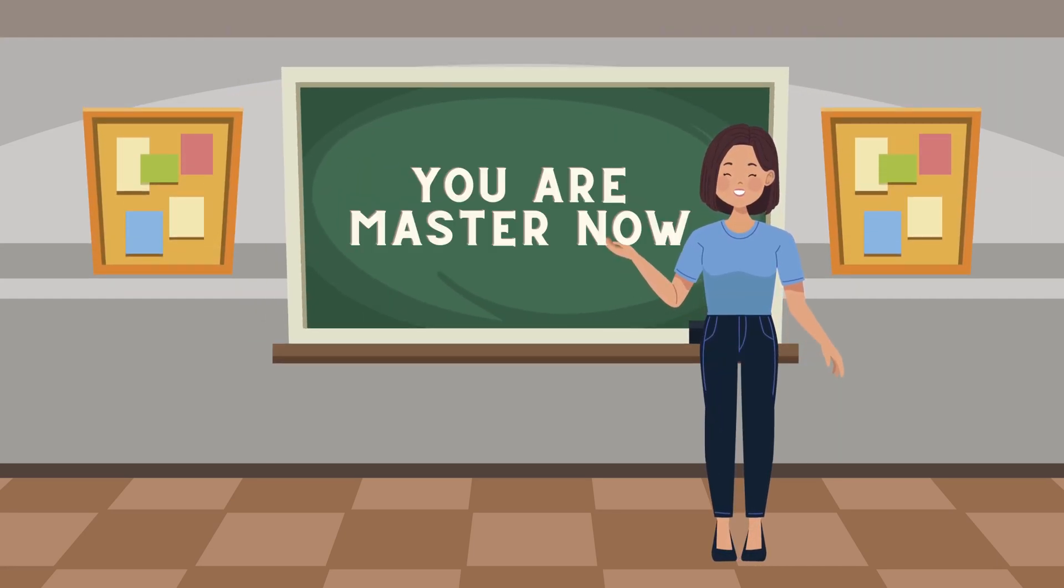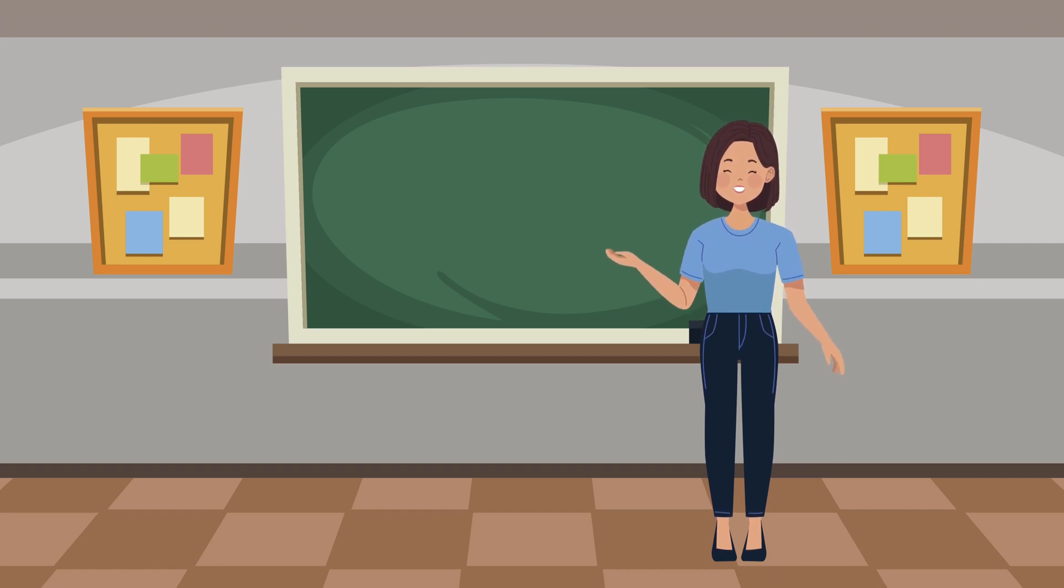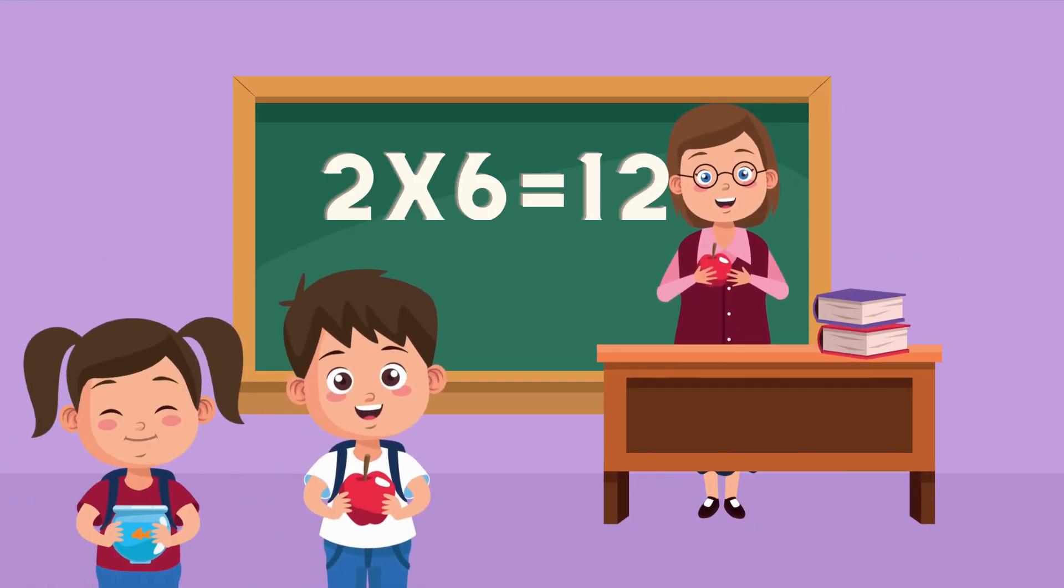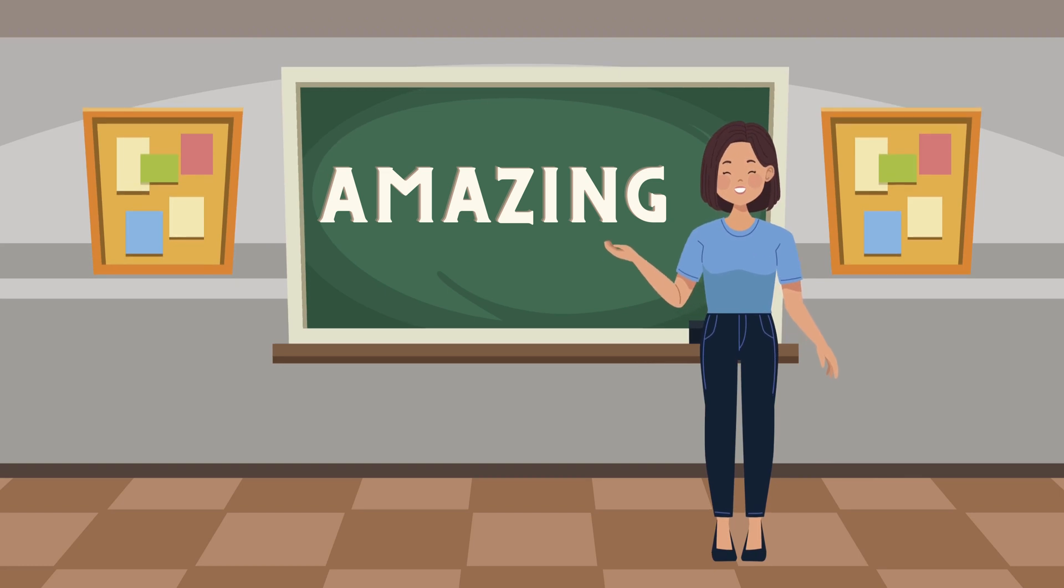Incredible! You're mastering the second multiplication table like true math magicians. Now, let's sprinkle some more magic dust. 2 times 6. 2 times 6 is 12. Amazing! I knew you could do it! Our magical journey is almost complete.